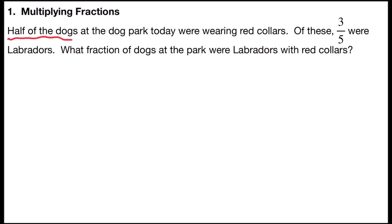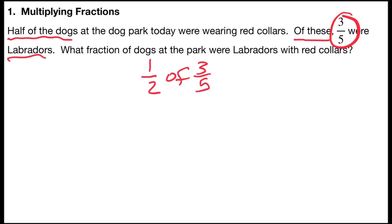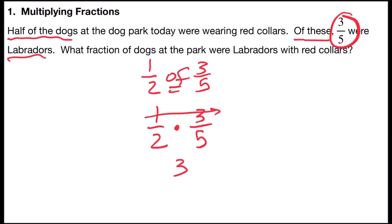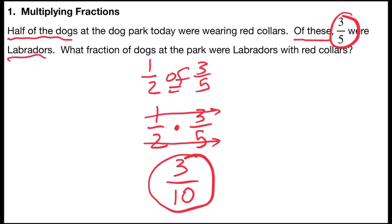We know that half of the dogs were wearing red collars, and of these, three-fifths were Labradors. So we need to find one-half of three-fifths. 'Of' means multiply, so we take one-half times three-fifths. Multiply across the top: one times three is three. Multiply across the bottom: two times five is ten. Three-tenths is not reducible, so our answer is three-tenths of the dogs at the park were Labradors with red collars.